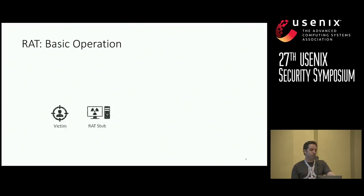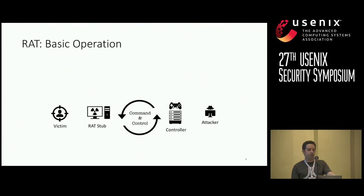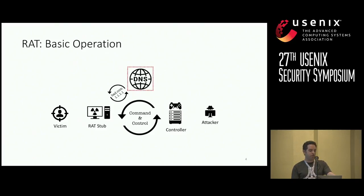A RAT has two pieces. One is the stub that is installed on the victim's computer. The other is the controller that allows an attacker to control the victim's computer and interact with the victim — this is what the security community refers to as C2, or command and control server. Some RAT operators use dynamic DNS services to freely switch between IP addresses. DDNS is cheap, almost free, and allows RAT operators to quickly churn through IP addresses and switch domains, making it difficult to block the controller.